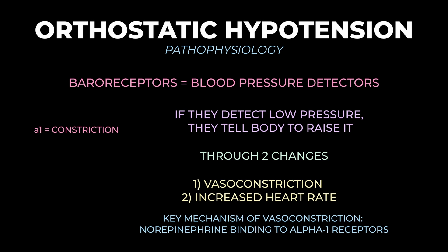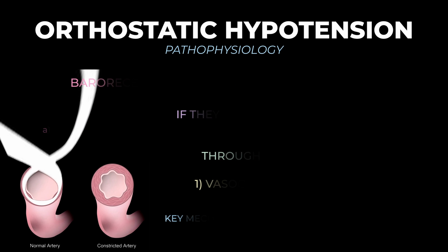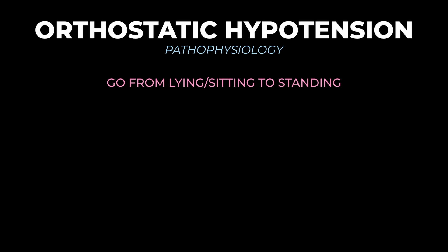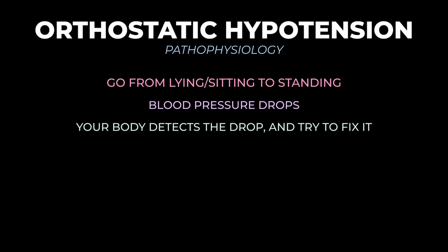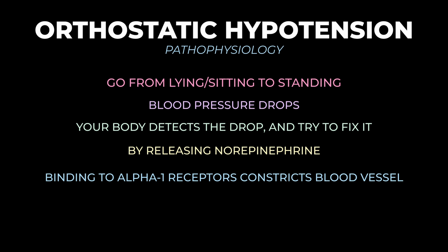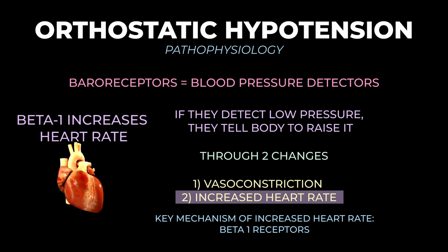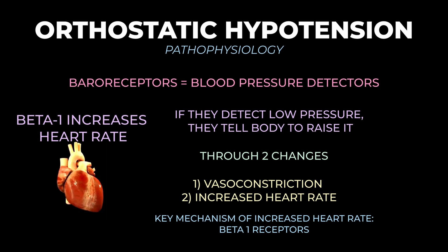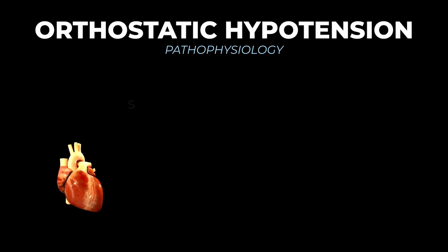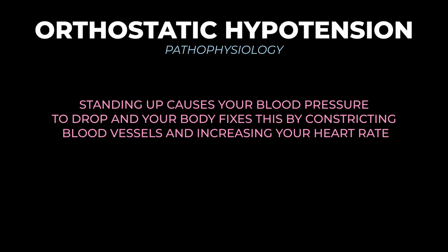The key mechanism causing blood vessels to constrict involves release of the neurotransmitter norepinephrine and its interaction with the alpha-1 adrenergic receptor. To summarize: when you go from lying down to standing, blood pools in your legs, causing a drop in blood pressure. Baroreceptors in the aorta and carotid arteries detect this and activate the sympathetic nervous system. Norepinephrine binds to postsynaptic alpha-1 receptors on vascular smooth muscle cells, causing them to contract and constrict the blood vessels, raising blood pressure. Heart rate also accelerates, mediated by postsynaptic myocardial beta-1 receptors. Simply put: standing up causes your blood pressure to drop, and your body fixes this by constricting blood vessels and increasing heart rate.